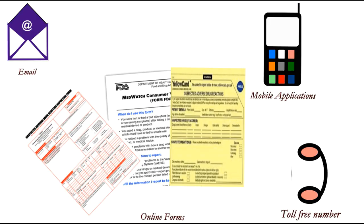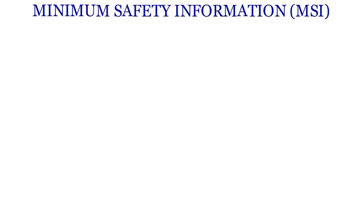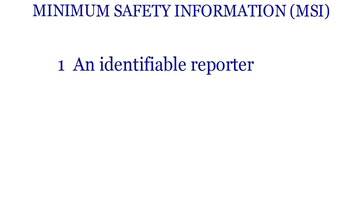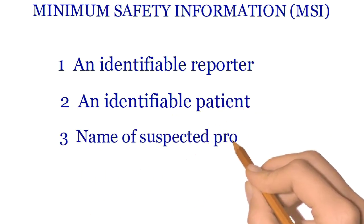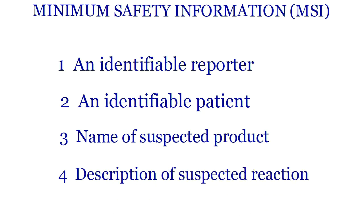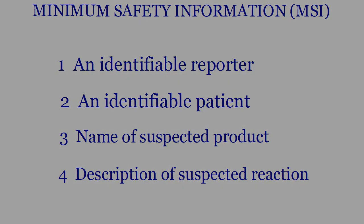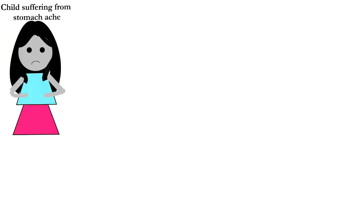That's an important question. A valid report should satisfy the minimum safety information criteria, which includes four basic pieces of information: an identifiable source, that is the reporter; an identifiable patient who suffered from the adverse reaction; the name of the suspected product which may have caused the adverse effect; and a description of the suspected reaction.